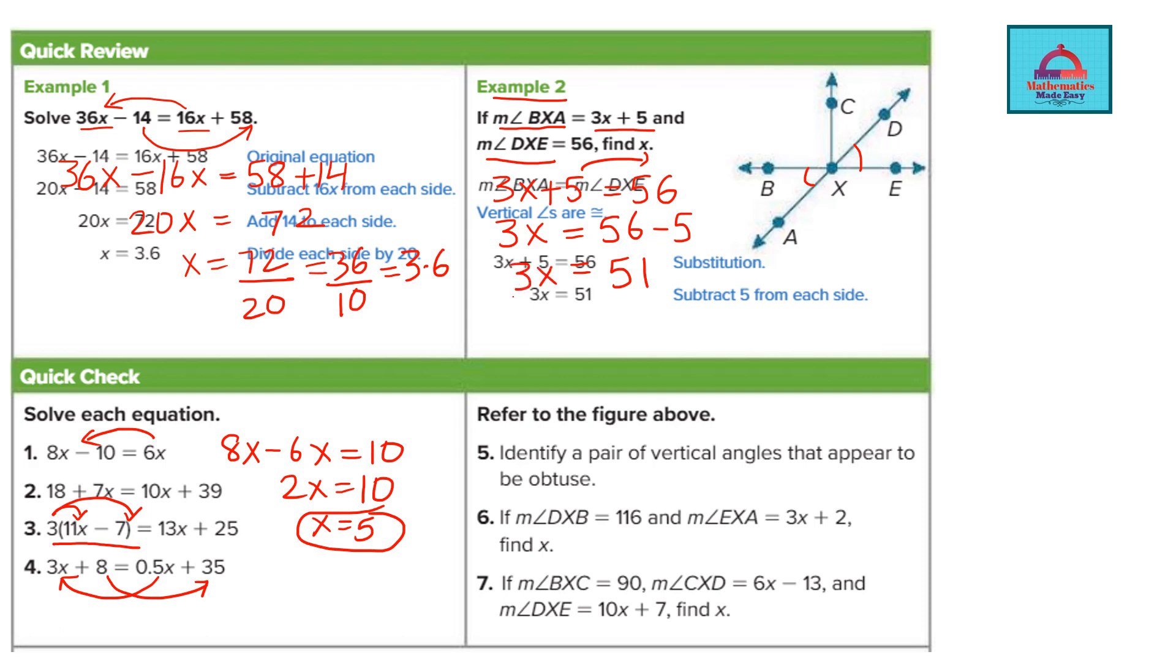Now 3x is 51. Divide both sides by 3. Why I am dividing by 3? Because I need the value of x so I have to isolate it and this 3 and this 3 will cancel.